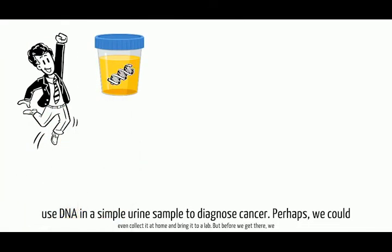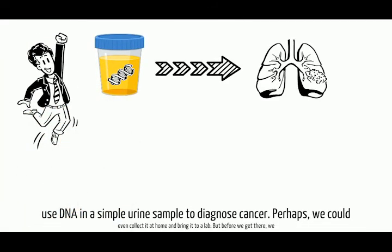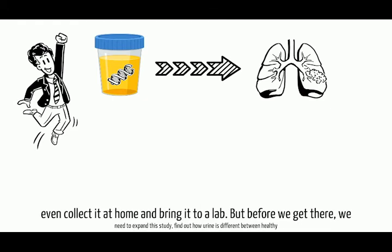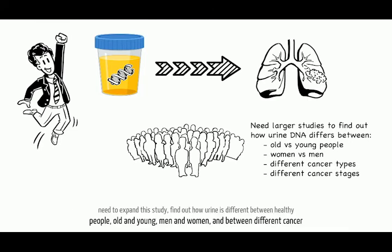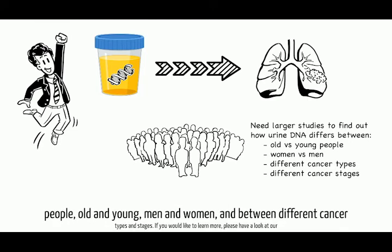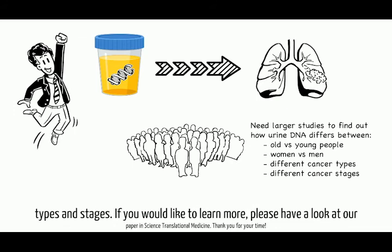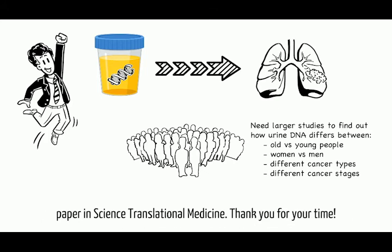These are exciting results that suggest that one day, we may be able to use DNA in a simple urine sample to diagnose cancer. Perhaps we could even collect it at home and bring it to a lab. But before we get there, we need to expand this study — finding out how urine differs between healthy people, old and young, men and women, and between different cancer types and stages. If you would like to learn more, please have a look at our paper in Science Translational Medicine. Thank you for your time.